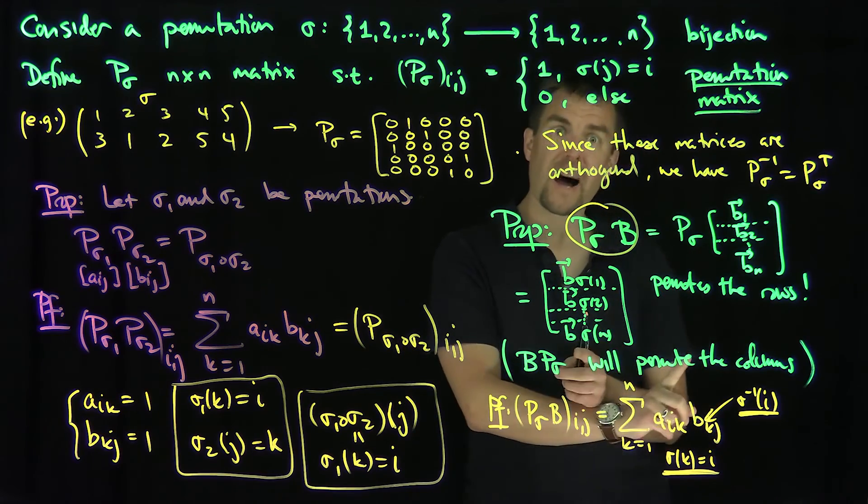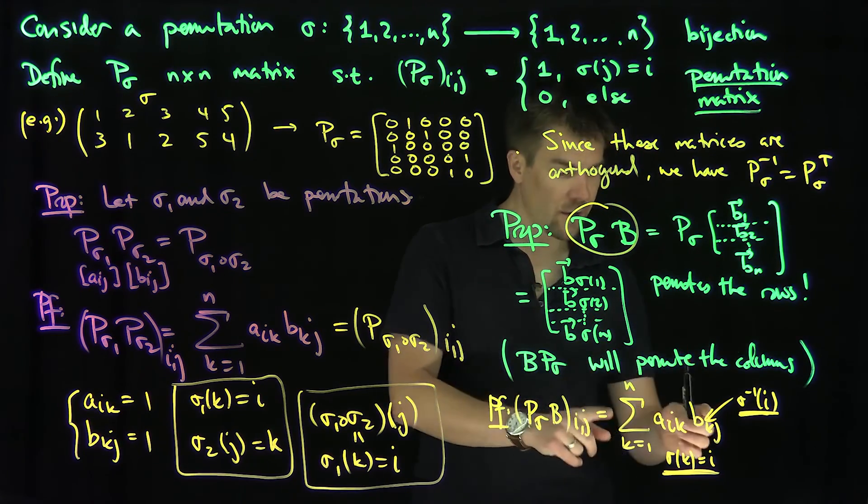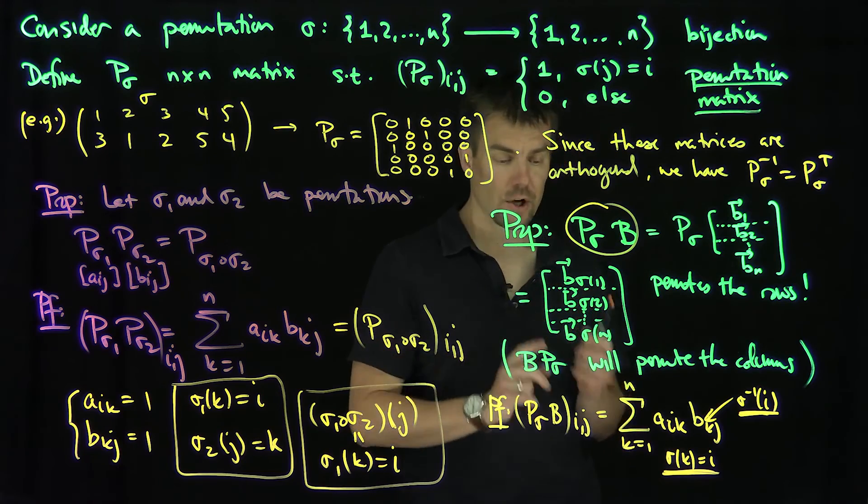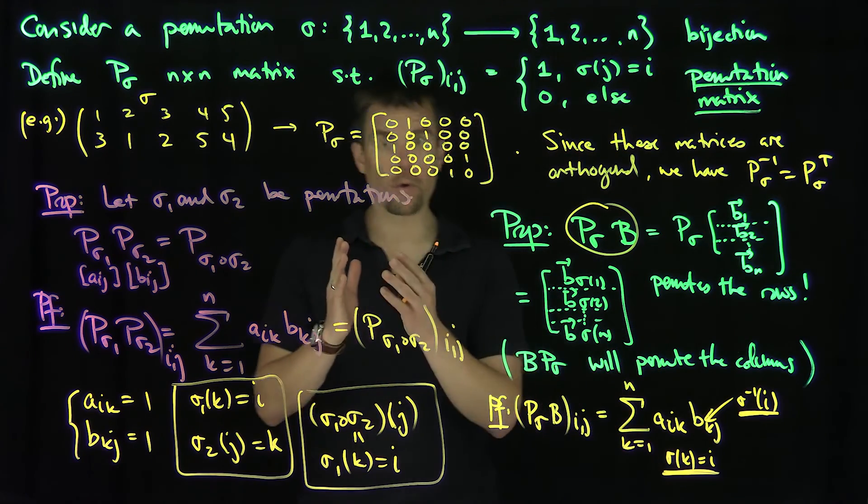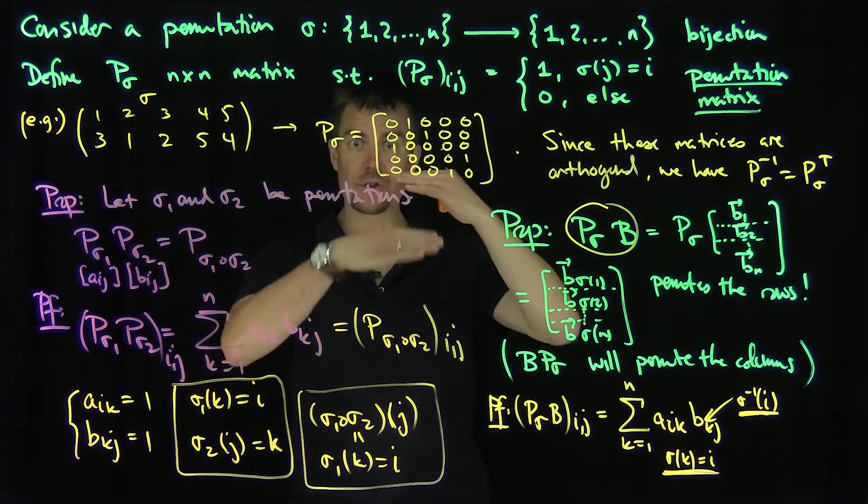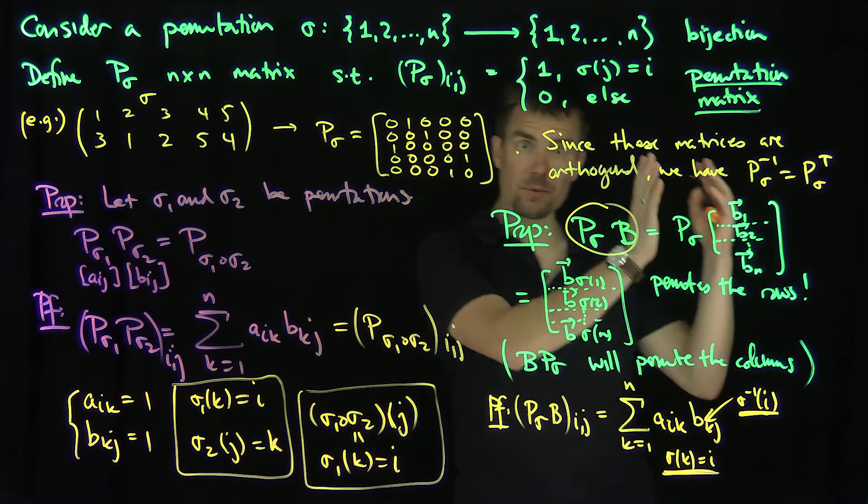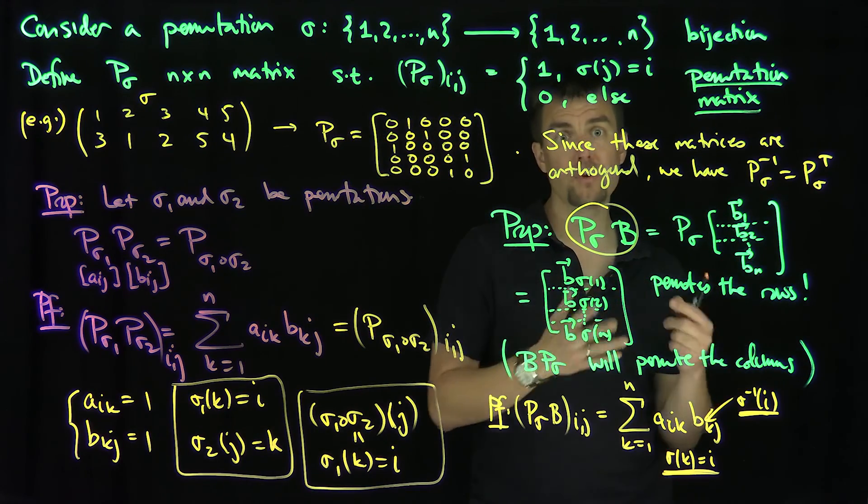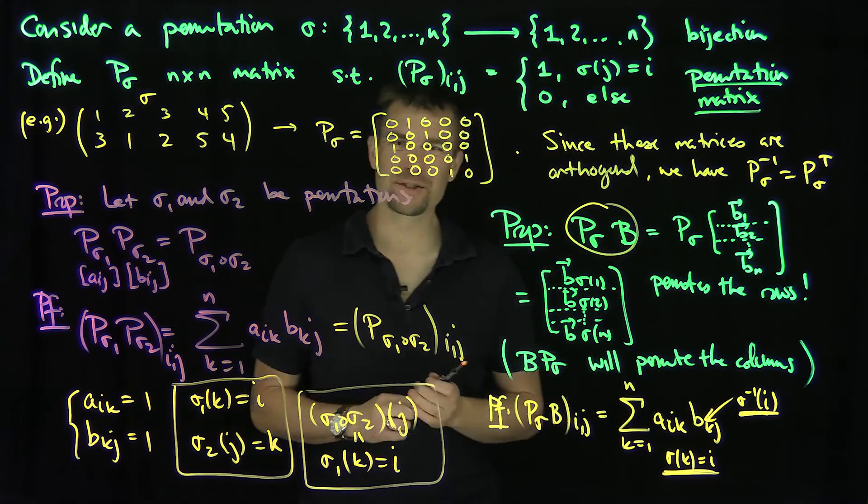And since these permutations are invertible, it says that the row coefficients of B are permuted when you perform this operation, when you multiply on the left. And then analogously, when you multiply on the right, the roles of i and j are just changed, and you're going to permute the columns in that case. So these permutations on the left correspond to interchanging rows, permuting rows, and the permutation matrix on the right corresponds to permuting the columns. Thank you very much.